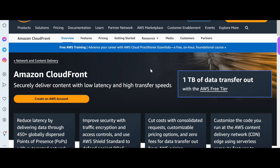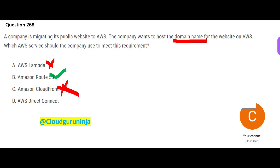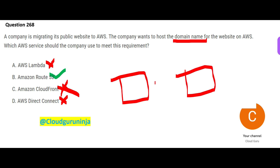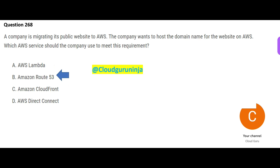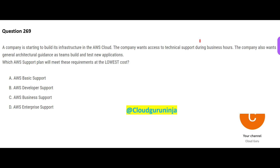CloudFront will not help you with domain names. Direct Connect is just a network — you lay a special private dedicated line between your on-premises environment and your AWS cloud. This dedicated line is only for your purpose. So this brings us to the end of this question. Route 53 is my final answer.